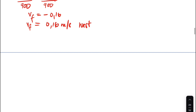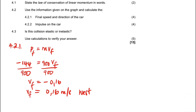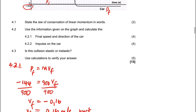Question 4.2.2: Calculate the impulse of the car. An important point — when two objects collide, the impulse on each object is equal in magnitude but opposite in direction. Remember that impulse is a vector quantity and is defined as the product of force and contact time. We will use the impulse-momentum formula.